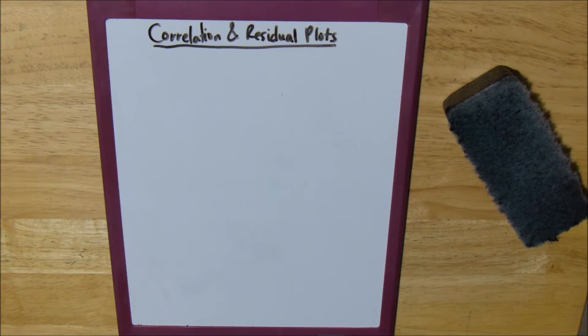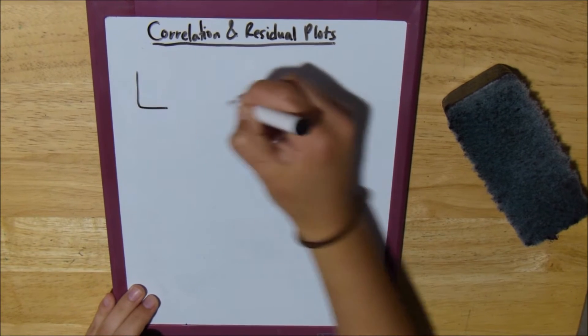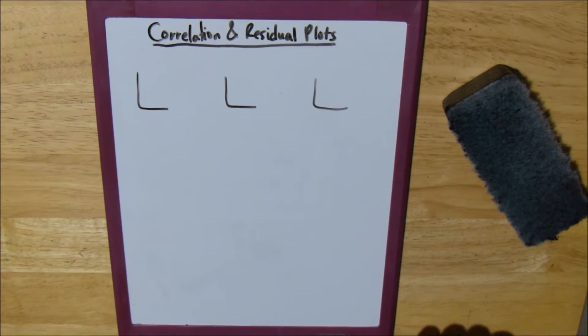To find the correlation of a graph is to determine if a relationship exists between two variables. So this can be described in three different types of ways, three different graphs.